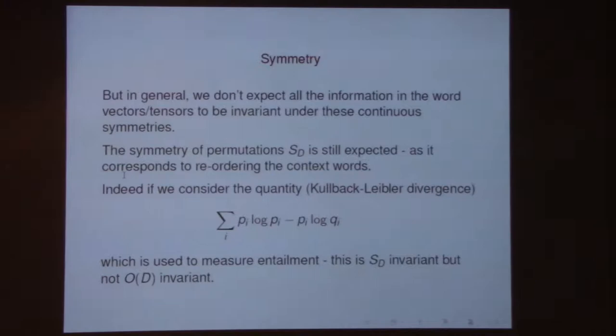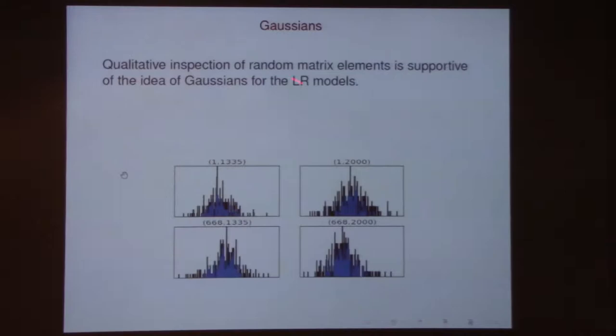This kind of reshuffling of the context words should be a symmetry of the meaningful things we're trying to extract from these numbers. Permutation symmetry seems a plausible thing to think about. The simplest Gaussian model with matrix models — we know these are Gaussians — so the first thing we try to do is look at these matrices.